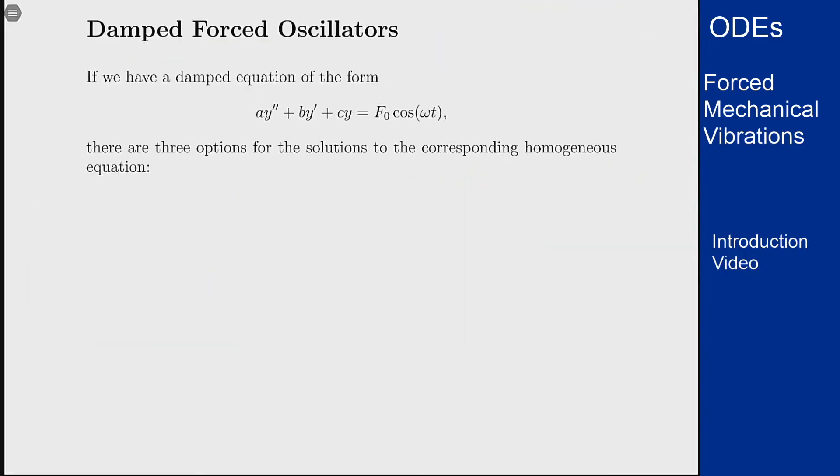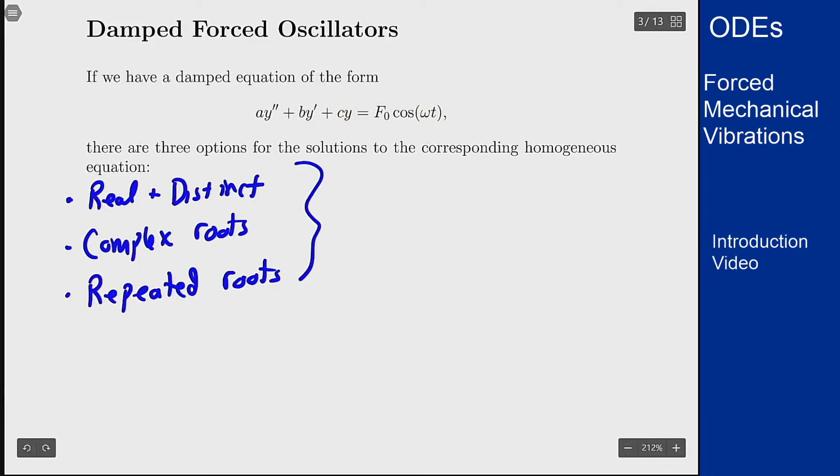The first part to mention is damped forced oscillators. If you have an equation of this form, we've got our normal damped mass on a spring equation on the left and our forcing term f₀cos(ωt) on the right. There are three options for the solutions to the homogeneous equation: real distinct roots, complex roots, or repeated roots. What does that mean for this solution? Well, in any case, since we know that both b and c are positive, we know that for real roots these will both be negative. For complex roots, the fact that b is positive means that the real part of this root will be negative. If it's a repeated root, the same thing happens—the value must be negative.